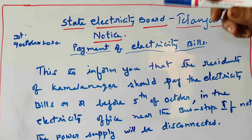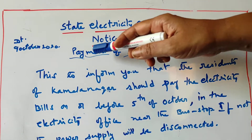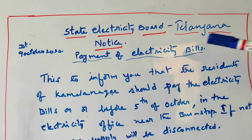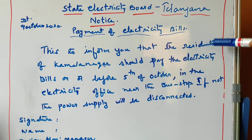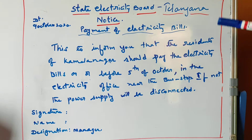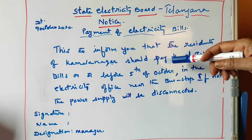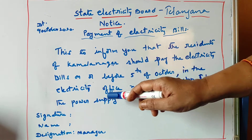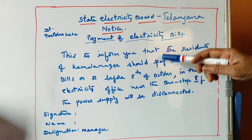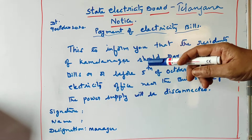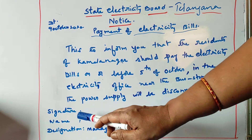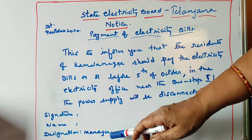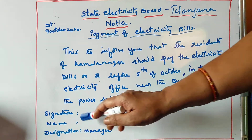This is the issuing authority. This is the notice itself, and this is the subject of the notice — payment of electricity bills. Then: 'This is to inform you that the residents of Kamalnagar should pay the electricity bills on or before the 5th of October at the electricity office near the bus stop. If not, the power supply will be disconnected.' This is the body of the notice. Then here: signature, name, and designation. The designation is Manager, because this is State Electricity Board.